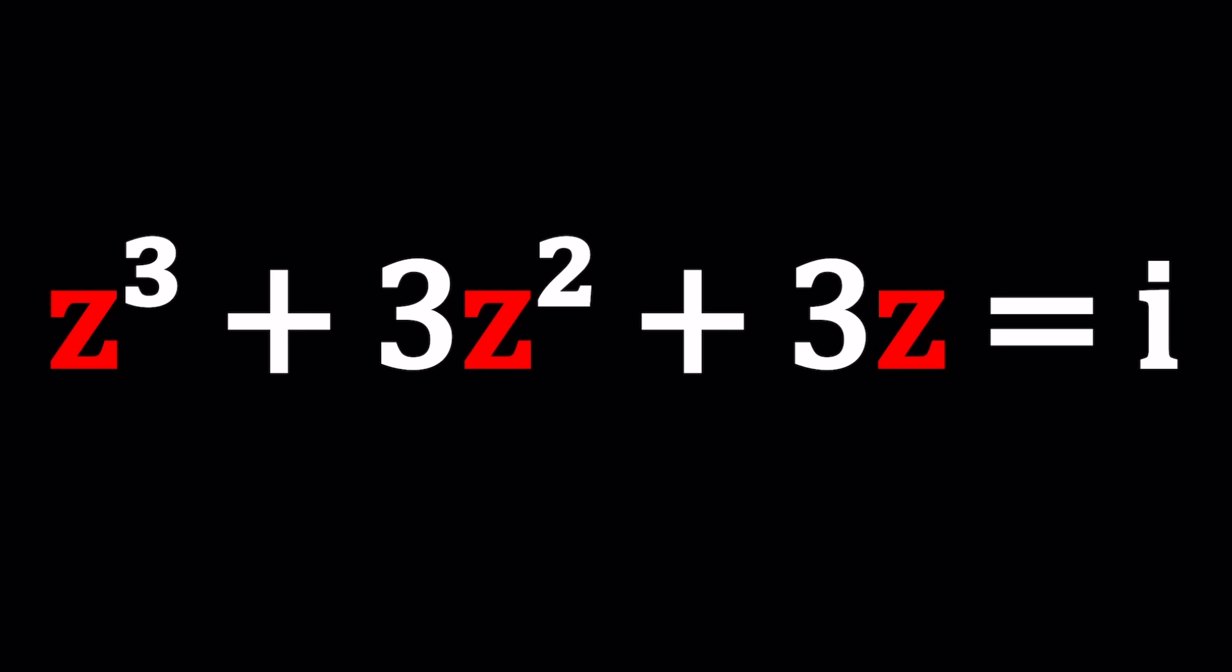We have z cubed plus 3z squared plus 3z equals i, and we're going to be solving for z values. If you're new to complex numbers, go ahead and check out my lecture videos on basics of complex numbers and a bunch of other problems that I made.